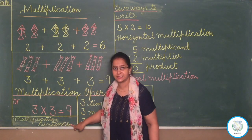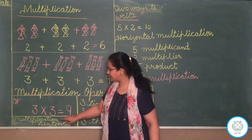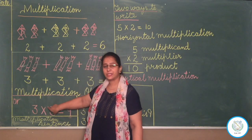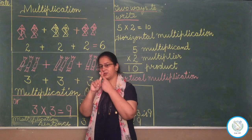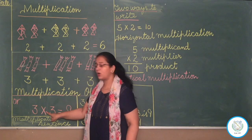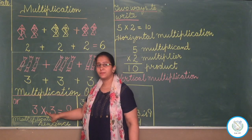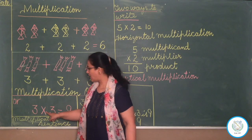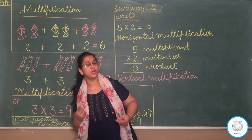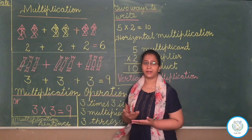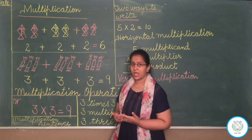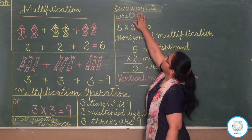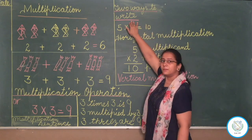Now see — this is the symbol of multiplication. This cross symbol is called the multiplication symbol or sign. Now there are two ways to write the multiplication. Let's see what those two ways are.